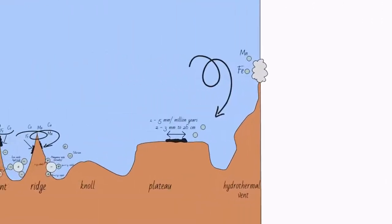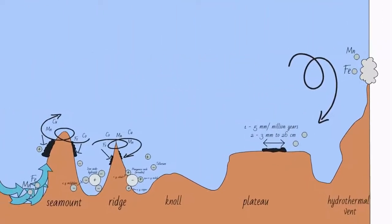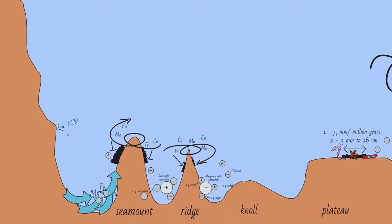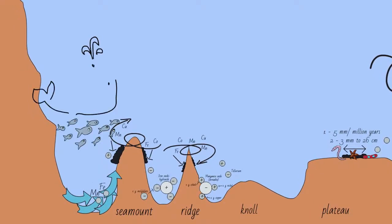For the deep-sea ecosystem, cobalt crusts are habitats with a high biological diversity, providing shelter to many different benthic species through the large pores of the crust. Furthermore, the seamounts and underwater rises provide essential locations for reproduction of many different species. Many fish species, also commercial fish, have their hatching and nursery places along seamounts.